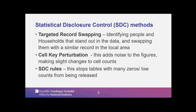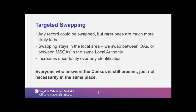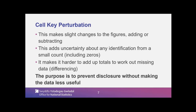So when you're using the system, you will find that out very quickly. Some areas will be refused if they don't meet certain criteria. In detail, with targeted swapping, any record could be swapped, but rarer records are more likely to be swapped. Swapping stays in the vague local area — we swap between OAs or between MSOAs generally in the same local authority. There are a few local authority swaps, but it just increases the uncertainty over any identification. The general principle is everyone who answers the census is still present, just not necessarily in the same place.